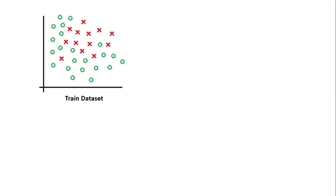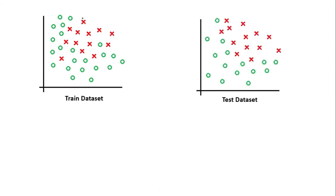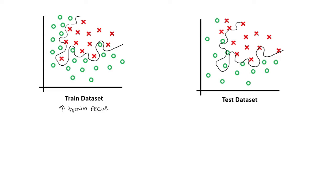Let's look at what overfitting is. Let's say we have this as our training dataset and this as our test dataset. It is possible that after training the model for a certain time, the decision boundary fits so well to the training dataset that it captures almost all the points in it. If we try to make predictions on the test dataset with this model, it will not perform well, giving us high train accuracy but low test accuracy. This condition is called overfitting. What we ideally want is a smooth curve that fits well on both the training and test datasets, and to do this we use regularization.